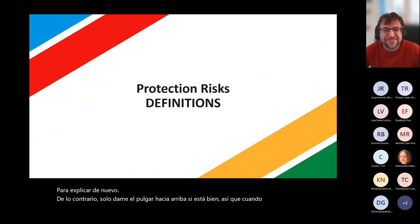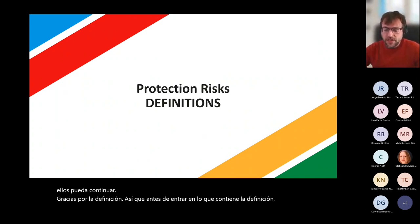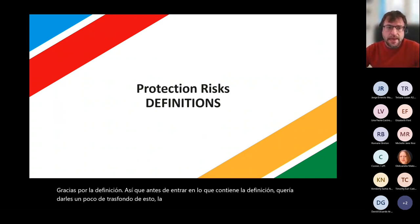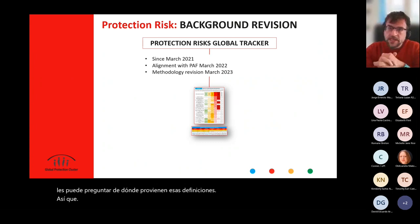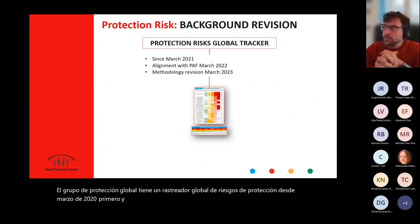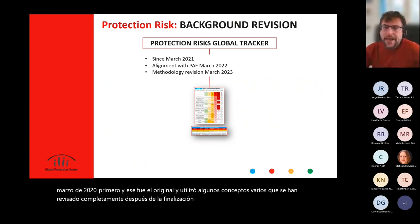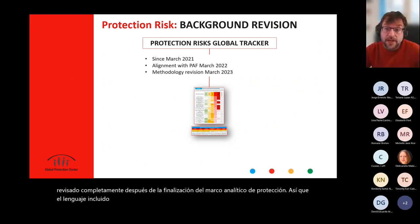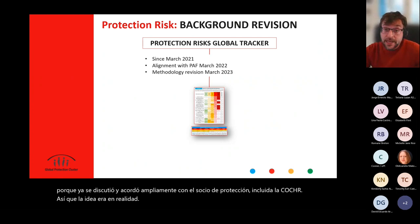Before entering the definitions, I want to give you a bit of background on the history, because you might be asked where these definitions are coming from. The Global Protection Cluster has had a protection risks global tracker since March 2021 — that was the original one, and it used several concepts that have been fully revised after the finalization of the protection analytical framework. The language included in the concept matrix of the protection analytical framework has been revised because it was already discussed and agreed widely with protection partners including ICRC. The idea was to align the language with that consultative exercise.